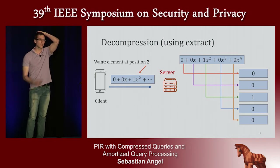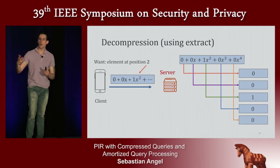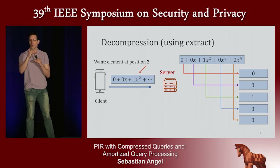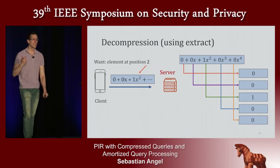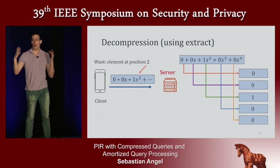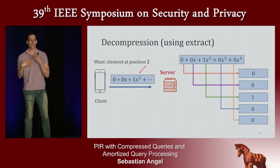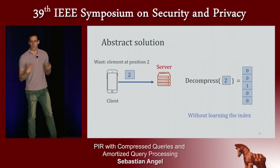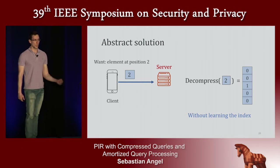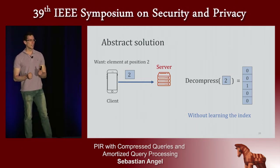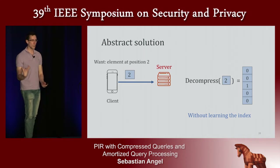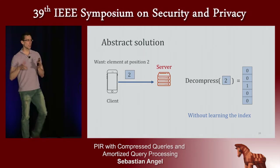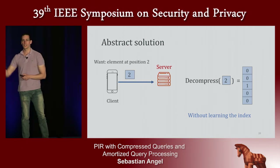You might ask: what is the degree of this polynomial? Is it going to be as large as the database? The answer is yes, but recall that we structure the database as a matrix, not a vector. So the degree of the polynomial is square root of n. If we want it smaller, we can go to higher dimensions and represent the database as a d-dimensional hypercube. In other words, the client sends an encryption of the index, the server performs decompression to recover the query vector, and then completes the PIR protocol.